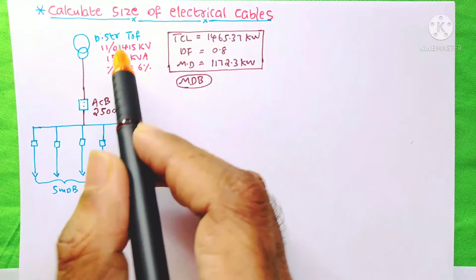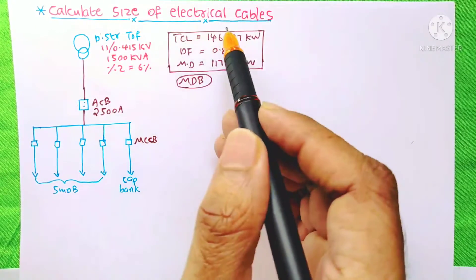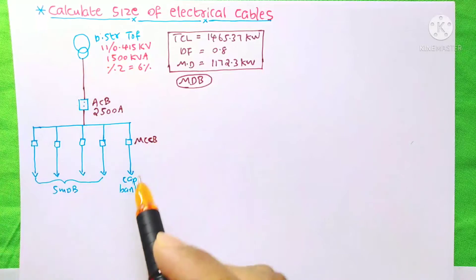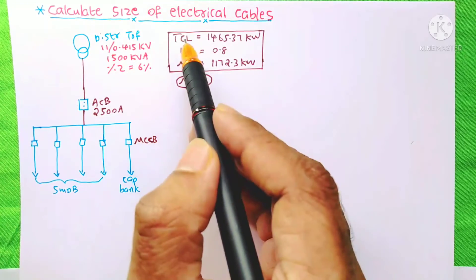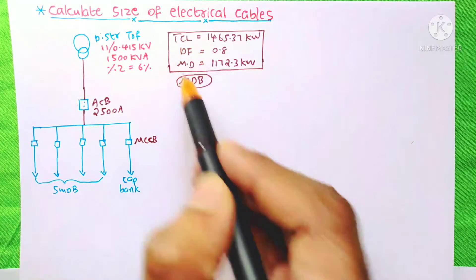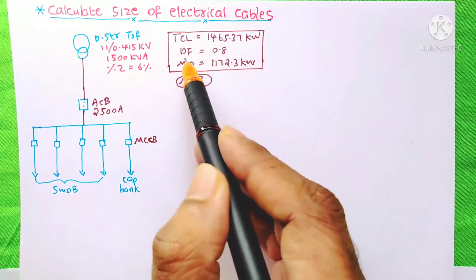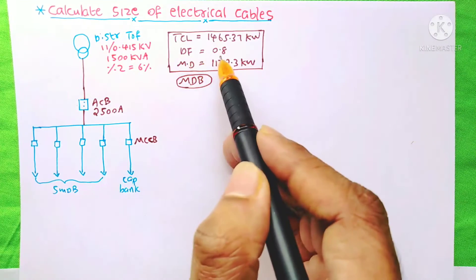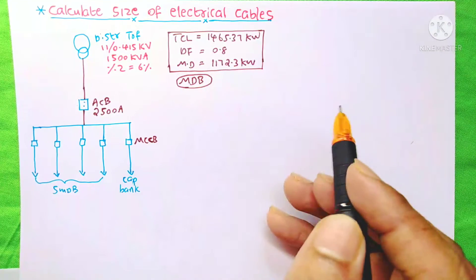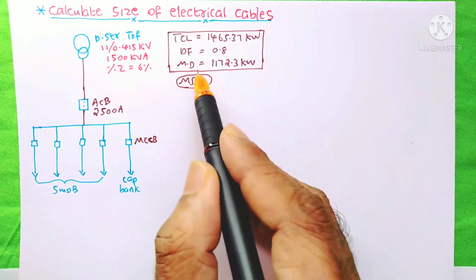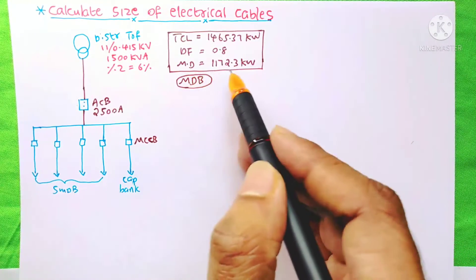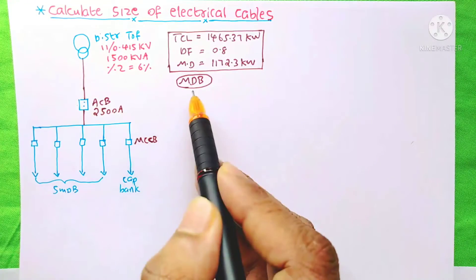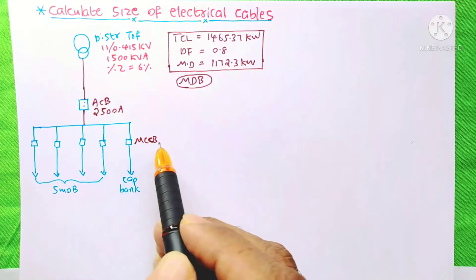How to calculate the size of electrical cables. Here we have a setup with a total connected load, and the demand factor is 0.8, that is 80% each. So our maximum demand is calculated, and this is for the MDB — the main distribution board.